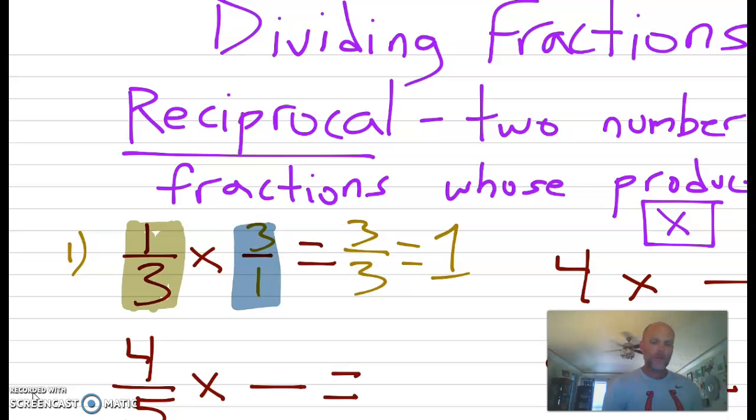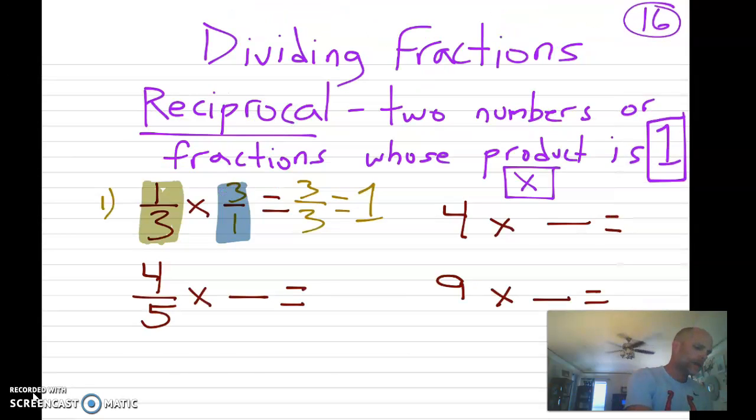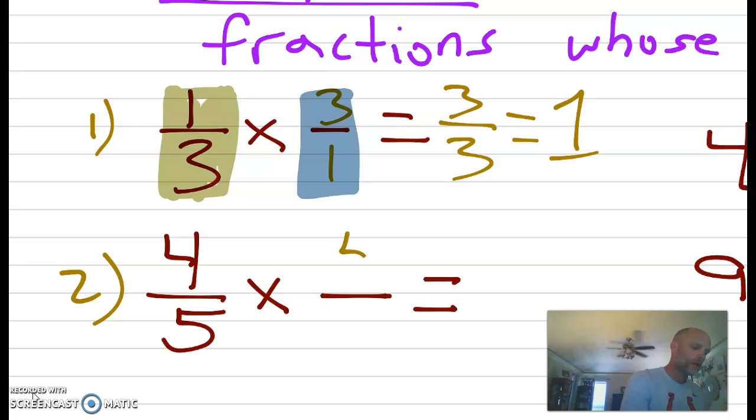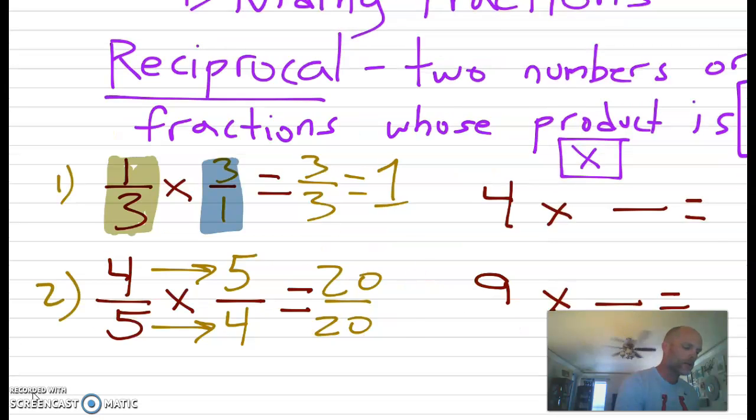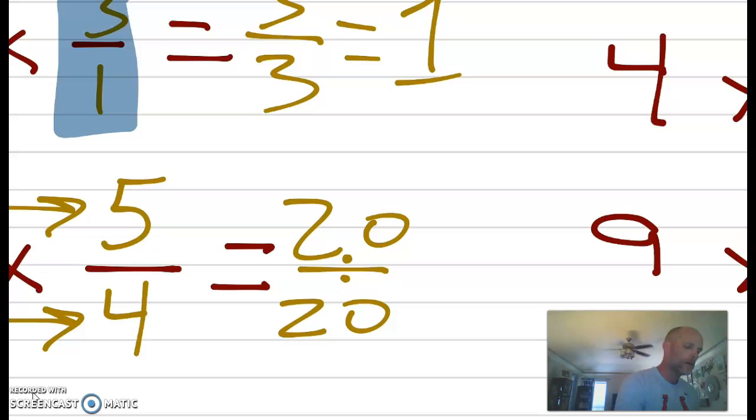Okay so that's all reciprocal is is taking a fraction and flipping it. Okay so if we look at the second one four fifths and we just flip that four fifths. We put the five on top and four on the bottom. What do we end up with when we multiply across? We've already done multiplying. So four times five is twenty and five times four is twenty. And twenty divided by twenty, don't forget this little sign here just means to divide. Twenty divided by twenty is one.